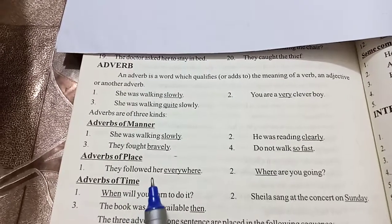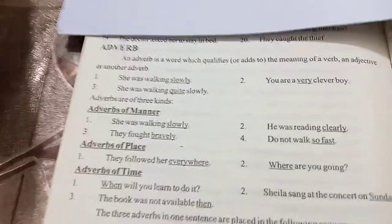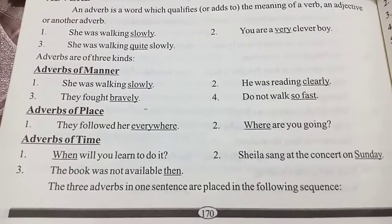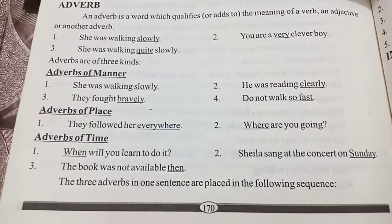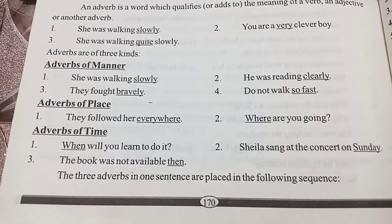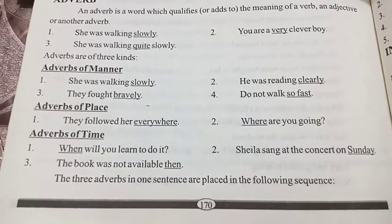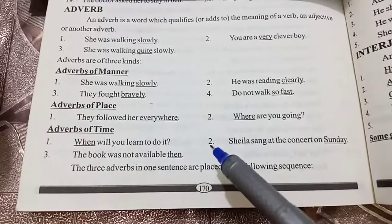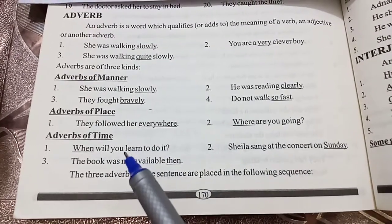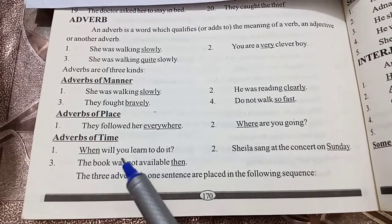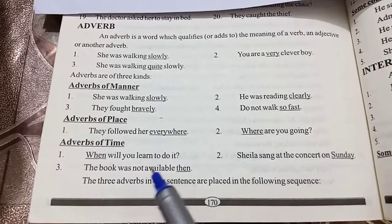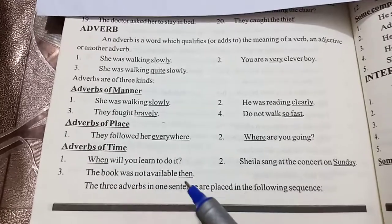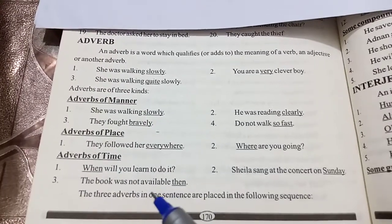The next kind is adverb of time. Adverbs of time answer the question 'when.' For example, 'Sana arrived early' — when did Sana arrive? Early. Another example: 'When will you learn to do it?' and 'The book was not available then' — 'then' answers the question 'when.' These words give the answer to the question 'when.'